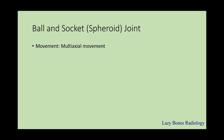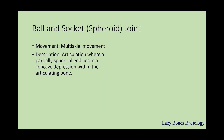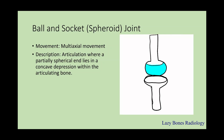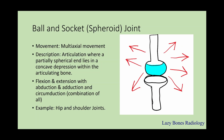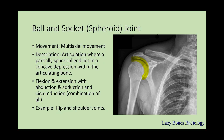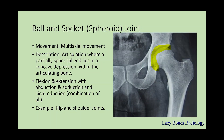Lastly, the ball and socket joint. This has multi-axial movement — articulation where a partially spherical end lies within a concave depression in an articulating bone. You're able to have flexion, extension, abduction and adduction, and circumduction. Examples include the hip and shoulder joints. As you can see here, the humeral head and glenoid fossa form a ball and socket joint, and the acetabulum with the femoral head is also a ball and socket joint.